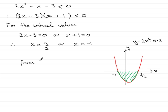I can say that from the graph, okay, from the graph that x lies between minus 1 and 3 over 2. When you have an inequality that is like this, it means that x is between minus 1 and 3 over 2. Okay.